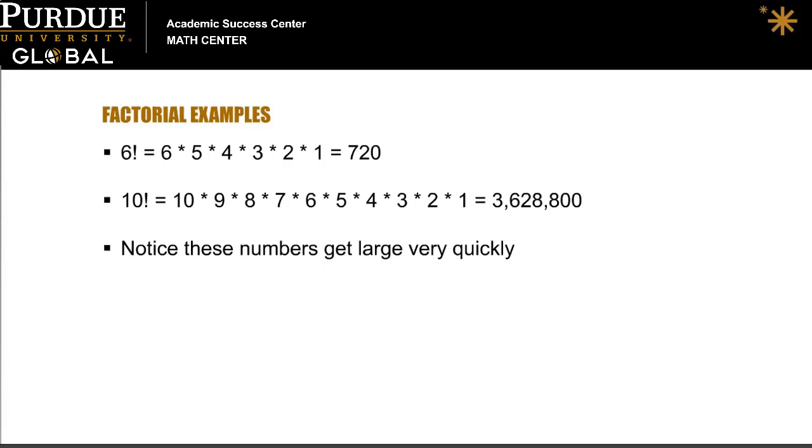You can find ten factorial the same way. Ten times nine times eight, etc., all the way down to one. Some things to notice about factorials. First, these numbers get large very quickly.